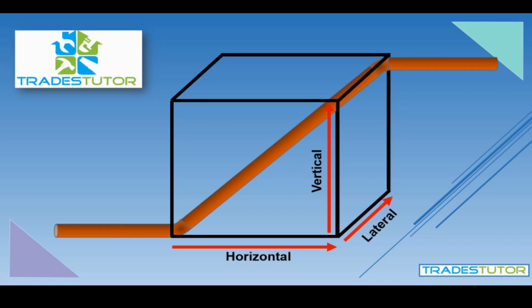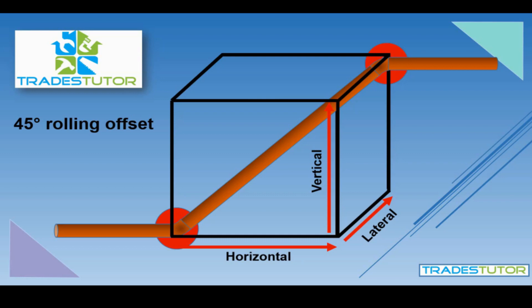Imagine a piece of pipe coming in one side of a room and cutting straight across to the other and going out the other side, just like the drawing shows. We're always going to be dealing here with a 45-degree rolling offset. What that means is those two fittings are both 45s — it comes into the space and goes 45 degrees diagonally, and then goes out on another 45.